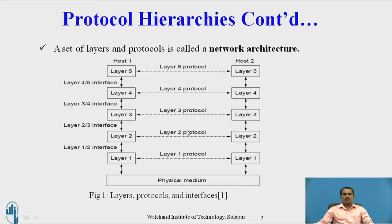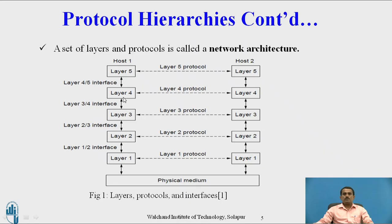This is a block diagram of layers, protocols, and interfaces. Here, user 1 is in host 1 and user 2 is in host 2. These two users want to send and receive data. The current layer, layer 5, has to interface with the next layer, layer 4. If the next layer is free, then only the current layer can pass the data. If it is busy, the current layer has to wait until the next layer is free. The same procedure has to be followed from layer 4 to layer 3.